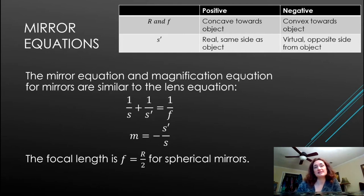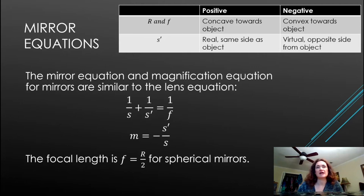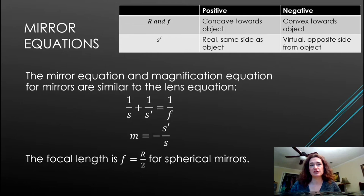Now let's define the signs for the mirror equation. The mirror equation and magnification equation for mirrors are very similar to our lens equations. For spherical mirrors specifically, the focal length equals r/2, where r is the radius of curvature. The focal length is always r/2 for a spherical mirror.